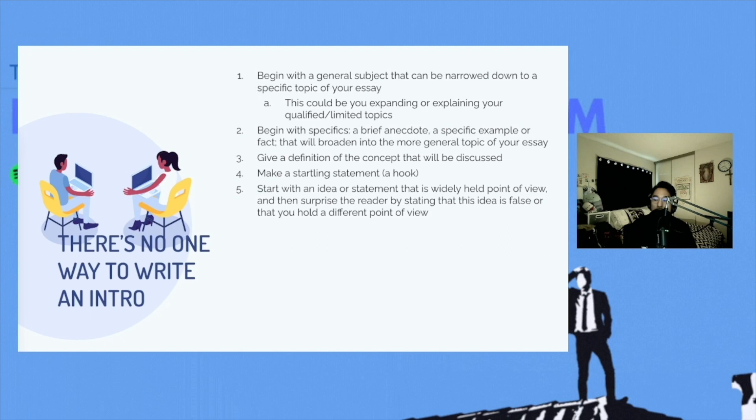And with number five, start with a statement or idea that is a widely held point of view. And then you could surprise the reader by stating that this idea is false, or that you hold a different point of view. Kind of getting your reader to shift thinking as you've just thrown information in their face, and you're like, wait a minute, that's actually wrong. Or this is what I think about that point of view.